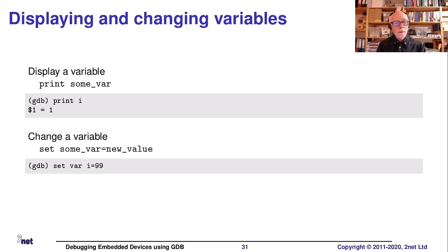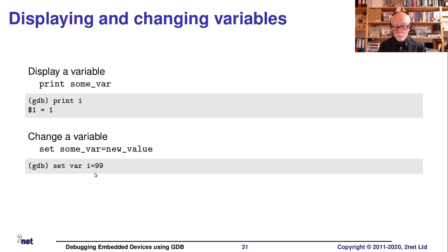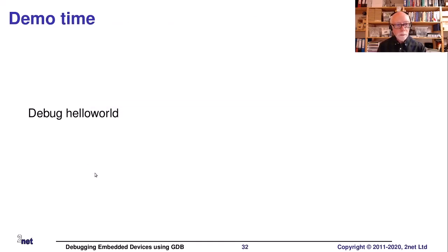We can print variables with 'print' and the variable name. We can change a variable's value by typing 'set var' and then the variable name and the value you want it to have.